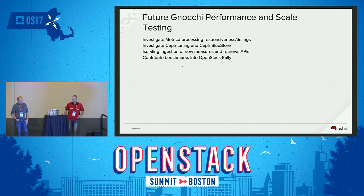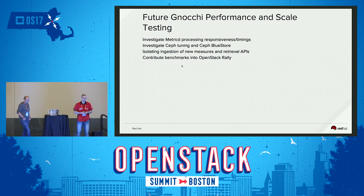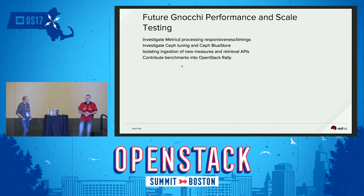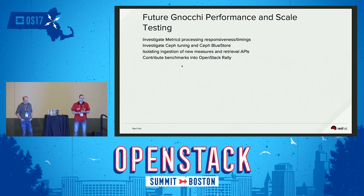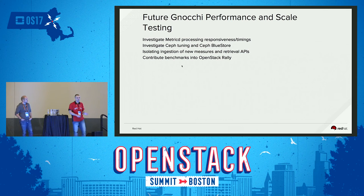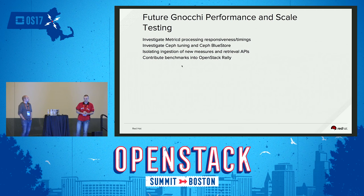Future performance and scale work: the next biggest thing is investigating metric-d's processing and responsiveness. I truly believe we can get Gnocchi above 5,000 instances fully processed, and I want to run this again and prove it. We'll probably need some Ceph tuning — Ceph BlueStore looks very promising for the small objects problem. We also want to isolate the ingestion of new measures from the retrieval APIs to avoid the collisions we saw. And I want to contribute my benchmarks into OpenStack Rally.